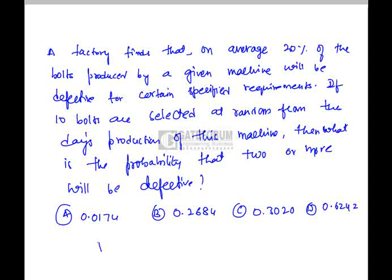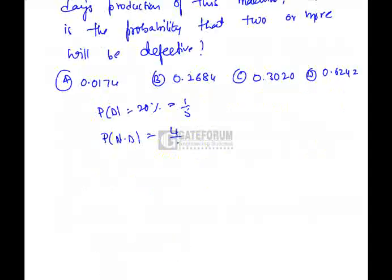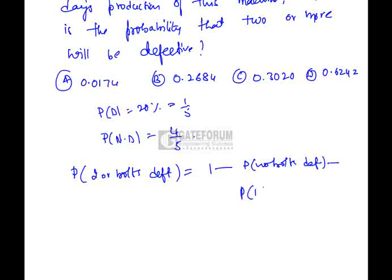Probability of defective is given as 20 percent, which is 1 by 5. So the probability of non-defective will be 4 by 5. We have to find the probability of two or more bolts defective. That means it could be 2, 3, 4, so on up to 10. So instead of finding 2, 3, 4, so on up to 10, it is enough to find 1 minus probability of no bolts defective minus probability of 1 bolt defective.